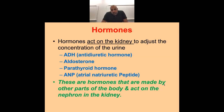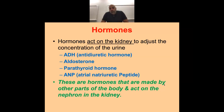ADH, antidiuretic hormone, is going to control water — help us keep water, so keep blood pressure. Aldosterone is going to work on keeping salt, so if we keep salt, we increase blood pressure. And atrial natriuretic peptide — that's too much pressure, so we're going to lower it. You need to know each one and what it affects: if it increases or decreases, what effect would happen to the body.